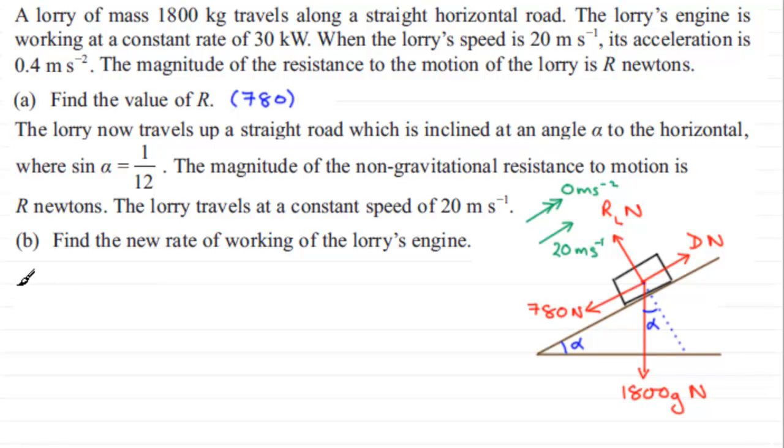So let's start there then. We'll start by resolving up the plane. And that means that we've got our driving force, D, minus the component of the weight down the plane. So that's going to be 1800g. And then we've got sine of alpha.